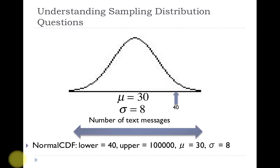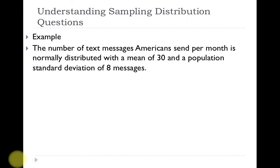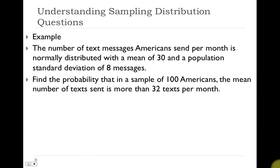The problem did not provide us with the sample size, therefore the problem is not based on a sampling distribution. Let's look at another example. The number of text messages Americans send per month is normally distributed with a mean of 30 and a population standard deviation of 8 messages — same problem as before. But this time, find the probability that in a sample of 100 Americans, the mean number of texts sent is more than 32 texts per month. This question is different because you are provided with a sample size and asked for the probability that the sample mean is more than 32.